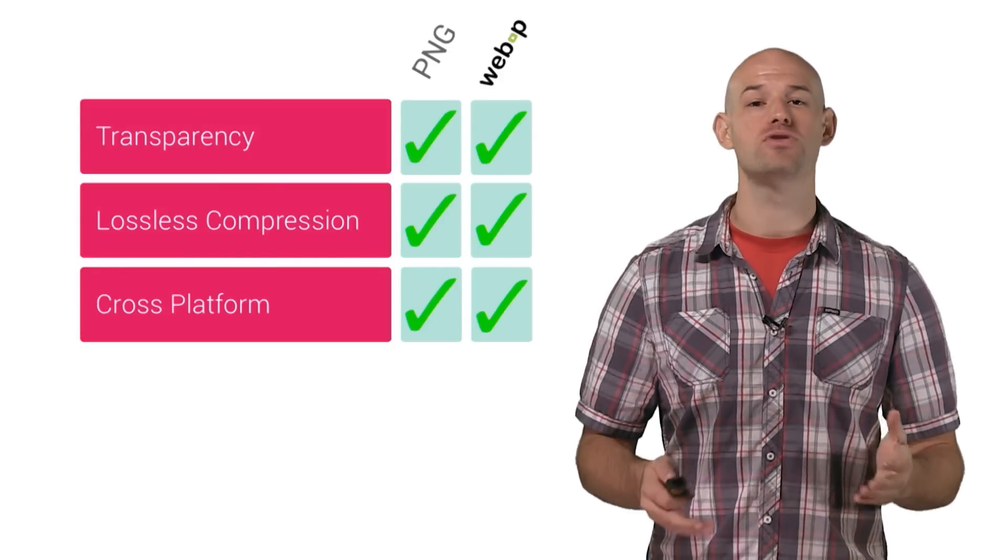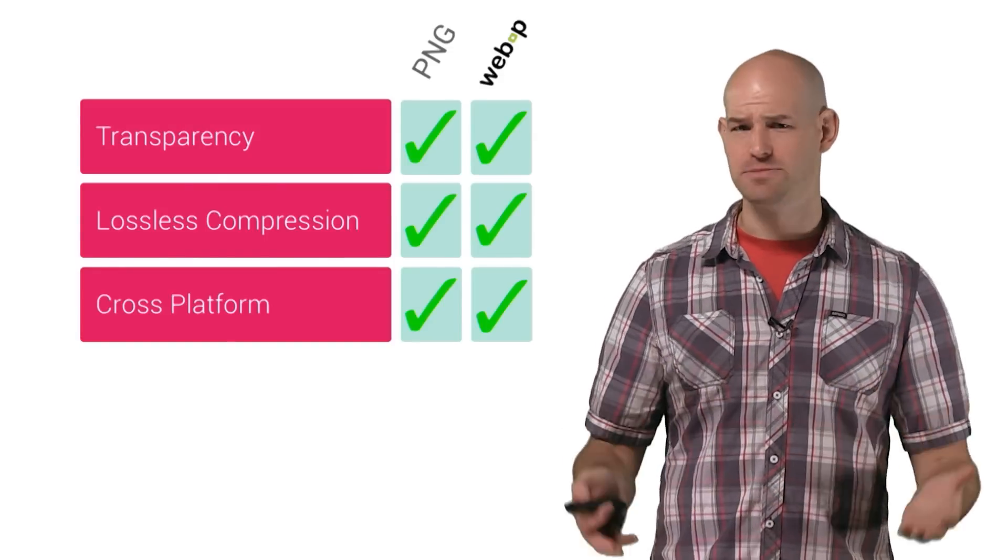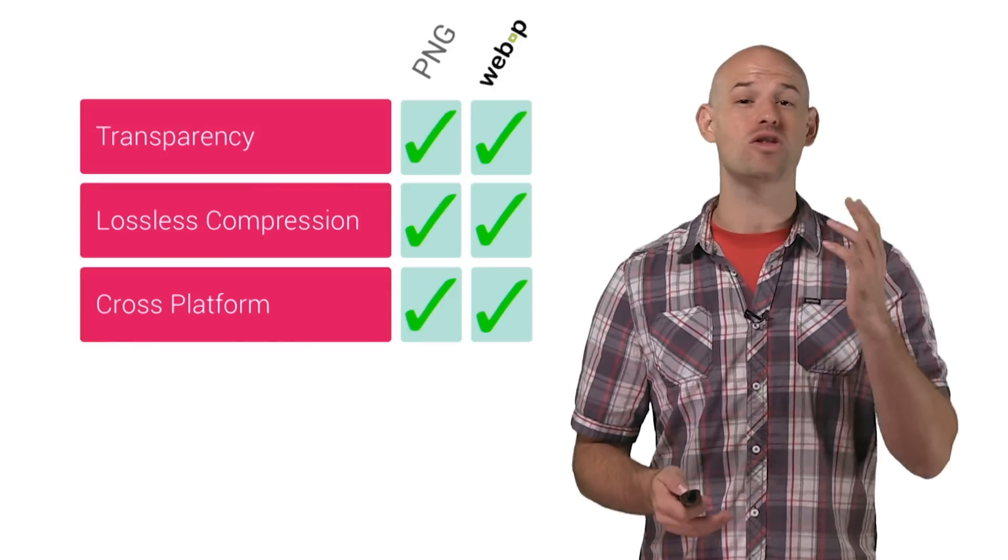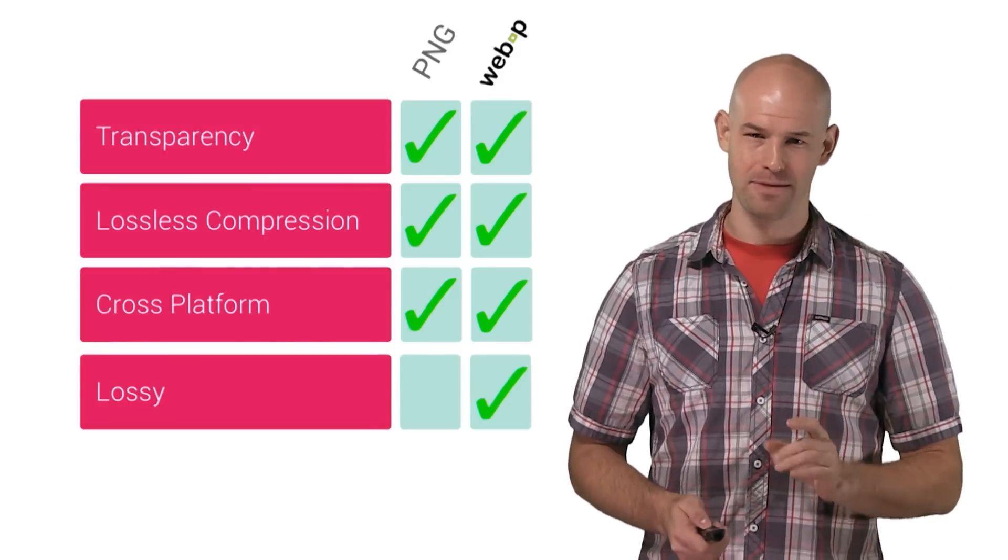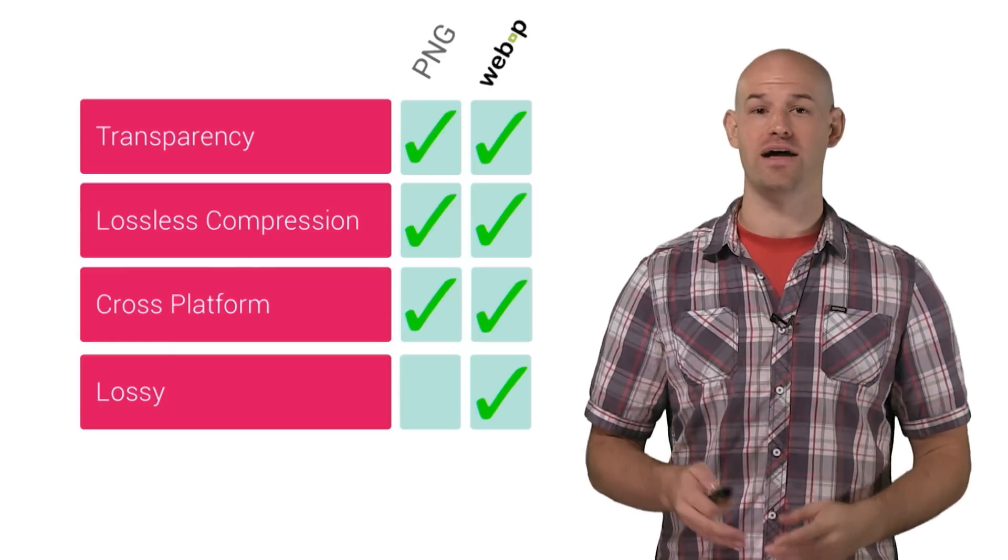WebP supports most of what game devs love about PNG, that is transparency, cross-platform support, and lossless compression. But it also supports lossy compression, meaning you can get even smaller file sizes.